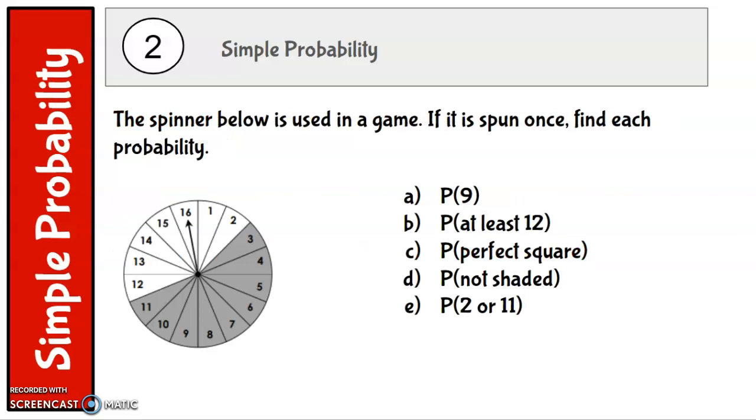Let's take a look at some examples. The spinner below is used in a game. If it has been spun once, find each probability. And you can see that there are 16 spaces. So the sample space would be 1, 2, 3, 4, 5, 6, 7, 8, 9, 10, 11, 12, 13, 14, 15, 16. The first question asks us to find the probability of landing on 9. So it's the number of favorable outcomes over the total number of outcomes. So there is one space here with 9 on it out of 16 total spaces. So there's one space that has the result we're looking for out of the number of spaces that there are.